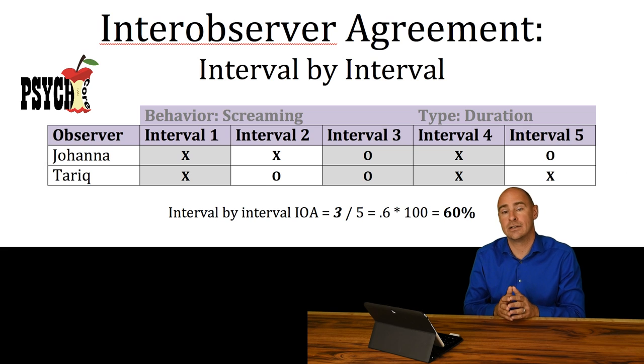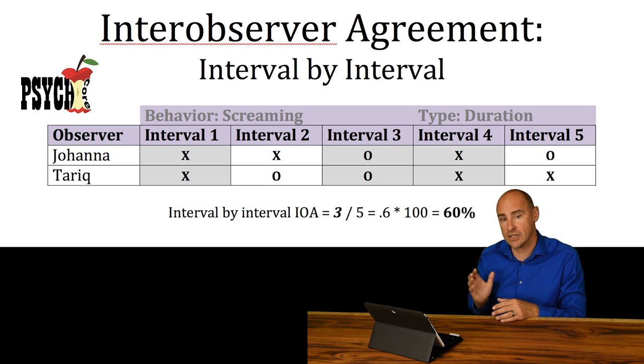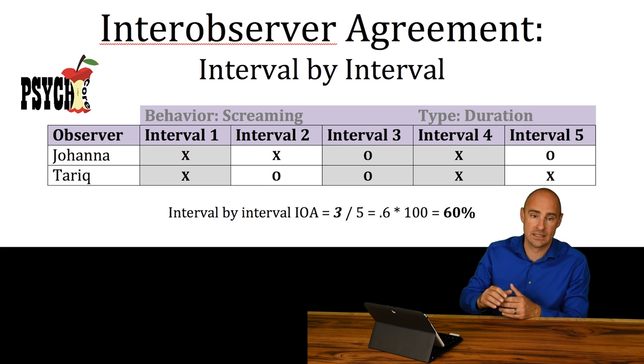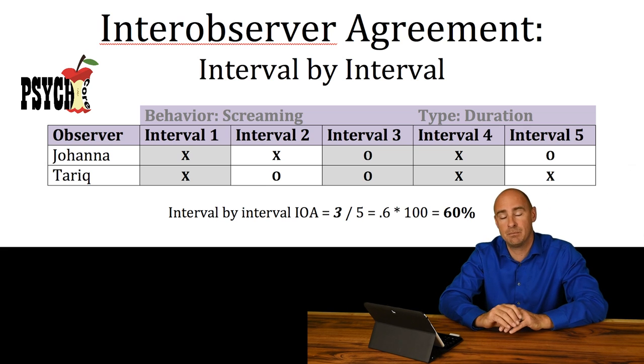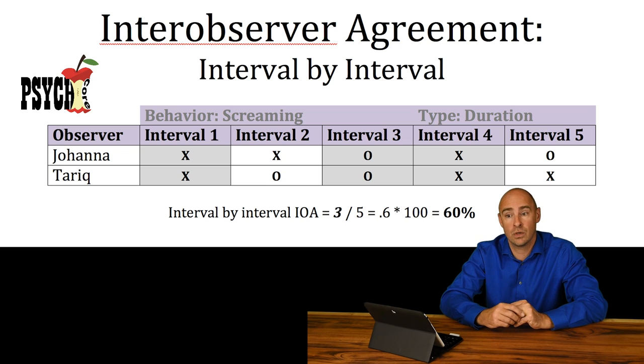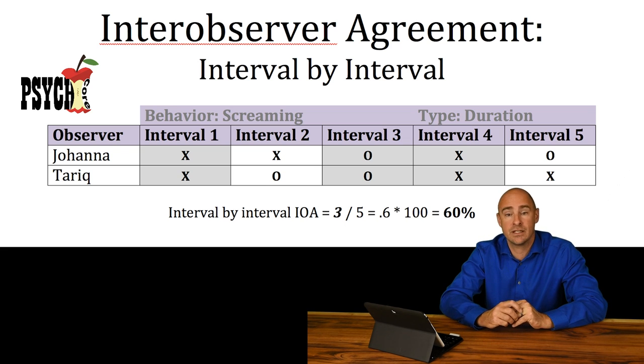It's a pretty good method. It's not quite as good as exact agreement, but it's not bad at all — and in fact it's the strictest one you could have for continuous type behaviors.